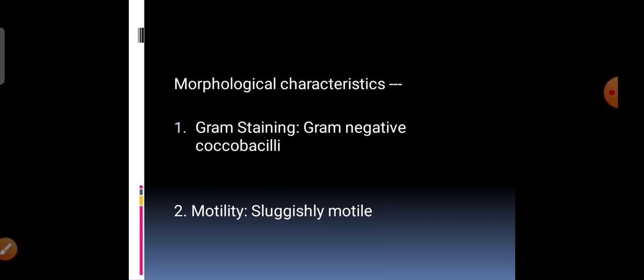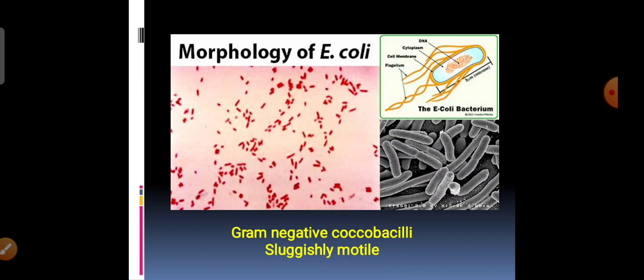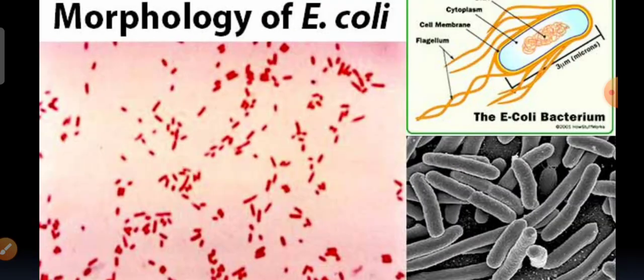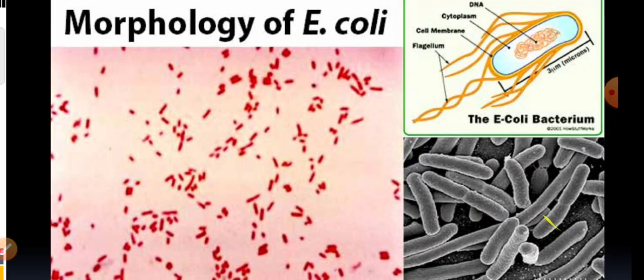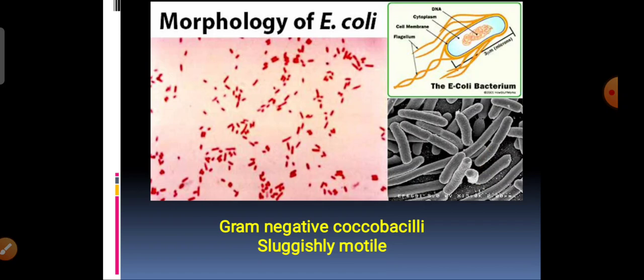Let us now study what kind of results are obtained if the organism is Escherichia coli. If you perform gram staining on E. coli, you get gram negative coco-bacilli and they are sluggishly motile. E. coli is sluggishly motile. The organism has peritrichous flagella. So the organism is coco-bacilli and sluggishly motile.